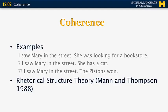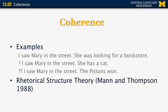One of the theories used in computational linguistics to understand how coherence works was introduced by Mann and Thompson in the 80s. That theory is called RST, or Rhetorical Structure Theory. It is used to determine the structure of discourse and identify some relations that hold between sentences and fractions of sentences.